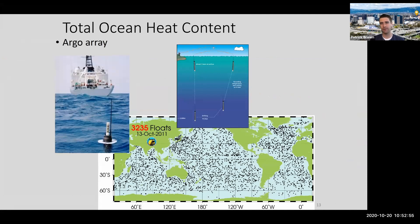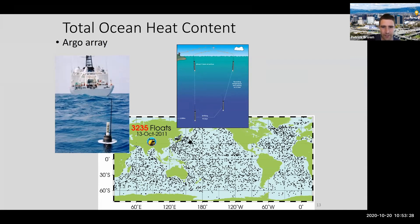Another instrument we use to measure the Earth getting warmer are floats. The Argo array is the name for all of these instruments in the ocean - basically little thermometers that drift around, moving to deeper parts of the ocean then coming back up, beaming their data to satellites which send it to a database where it's all compiled. Here's a map showing where these were on October 13, 2011 - over 3,000 of them, deployed all over the ocean since 2004. These are now another independent line of evidence measuring temperature.